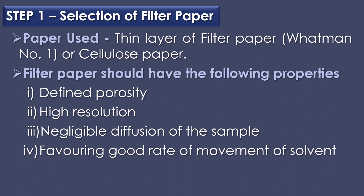Step one is selection of filter paper. Usually a thin layer of filter paper, particularly Whatman No. 1 filter paper or cellulose paper, is commonly used. Fine quality filter paper used for paper chromatography should have the following properties: defined porosity, high resolution, uniform diffusion of the sample, and favouring a good rate of movement of solvent.